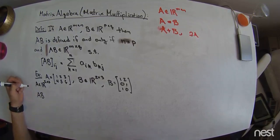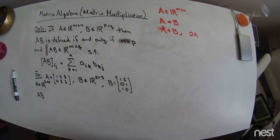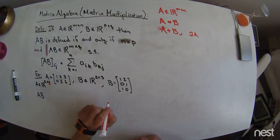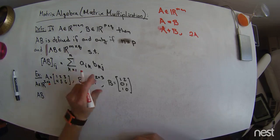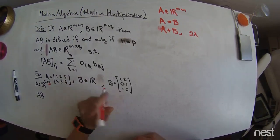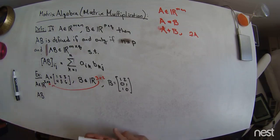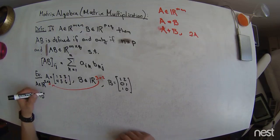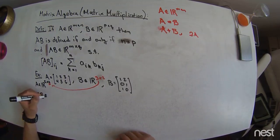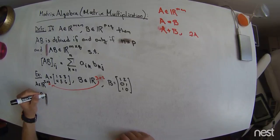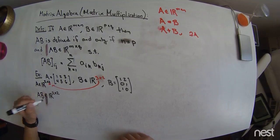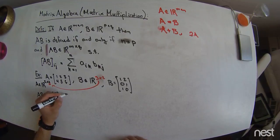Then A times B is defined, right? A times B is defined because the number of columns in the A matrix are equal to... This is an error, right? 2 by 3, that's not right. I just wrote down a 3 row by 2 column matrix, and so these two numbers are the same. So the matrix multiplication is defined, and it is an element of 2 by 2 matrices with real entries, right? Now, how do we find this?